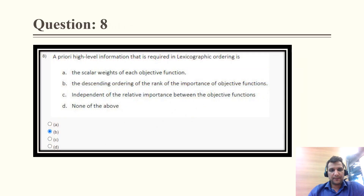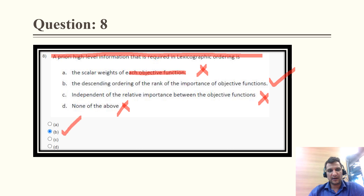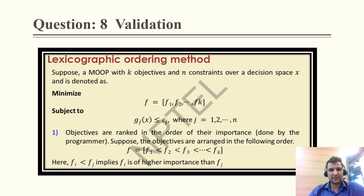Question 8: what prior high-level information is required in lexicographic ordering? The option about scalar weights of each objective function is a wrong statement. The correct answer is option C — the descending order of the rank of importance of the objective functions. The validation: in lexicographic ordering, f1, f2, f3, ..., fk are arranged in descending order of priority.